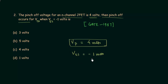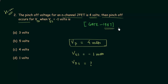When Vgs equals minus 1 volt, you have to find the value of VDS. This problem is given as a homework problem — there are four options and it is taken from the GATE 1987 ECE paper. Once you have the correct option, post it in the comment section and explain your reasoning. From the next lecture we will start MOSFET.